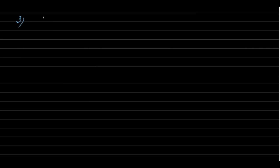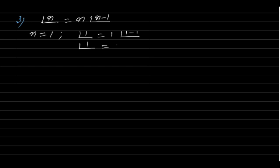From the second point — factorial N = n × factorial(n−1) — if we replace N by 1, we get factorial 1 = 1 × factorial 0, meaning factorial 1 equals factorial 0. Since factorial 1 is always 1, we conclude that factorial 0 = factorial 1 = 1.